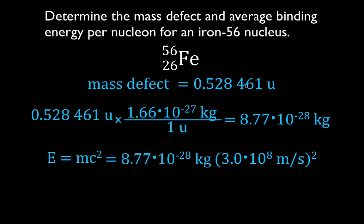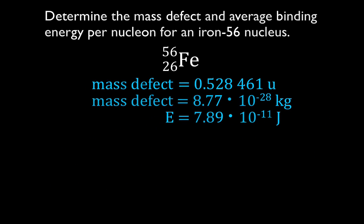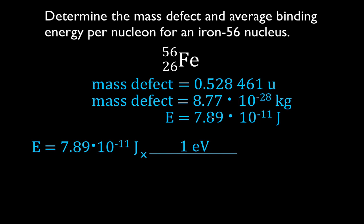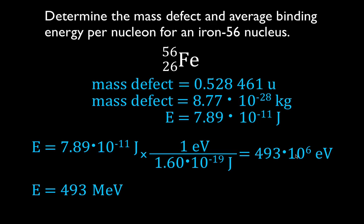Now we put that mass into Einstein's equation, multiplying by the speed of light squared, and get 7.89 × 10⁻¹¹ joules. Since binding energy is usually expressed in electron volts or mega electron volts, we convert: 1 eV = 1.6 × 10⁻¹⁹ joules, which gives 493 × 10⁶ electron volts. Since 10⁶ is mega, that is simply 493 mega electron volts.